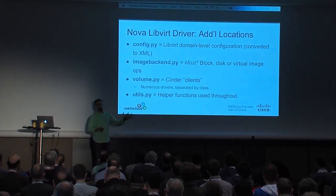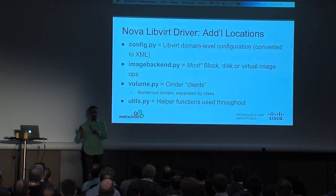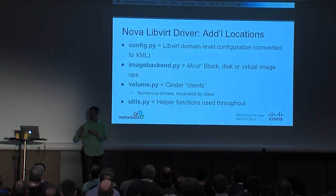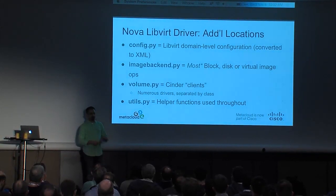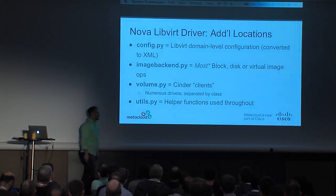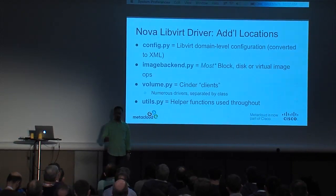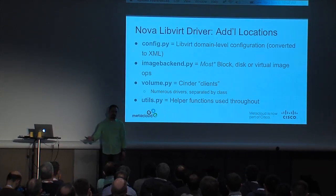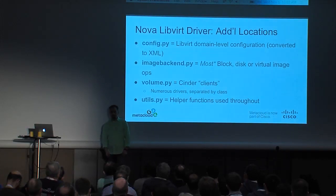There's work being done to improve abstraction further — it's going in a direction where it'll eventually go through LibVirt storage pools, so even that level of abstraction will not be occurring in Nova; it'll be handed off to LibVirt. Each of the volume interfaces for Cinder has a corresponding client driver present in volume.py. And utils.py contains all the functions generally being used repeatedly by the LibVirt driver throughout the code base.